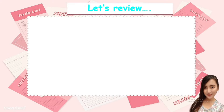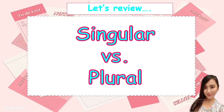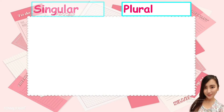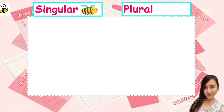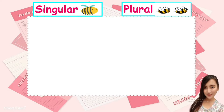But before that, let us first review what do you mean by singular and what do you mean by plural. Let's have a review. Singular means only one. Plural means more than one — two, three, four, five, six, seven, eight, and so on.